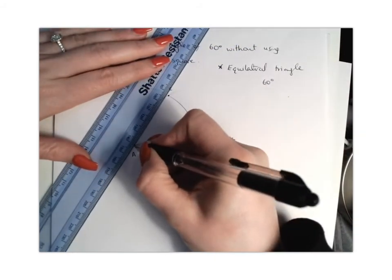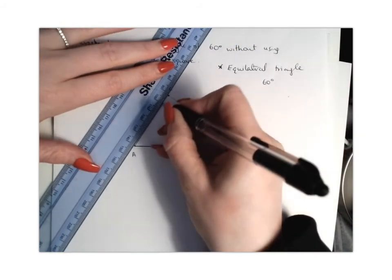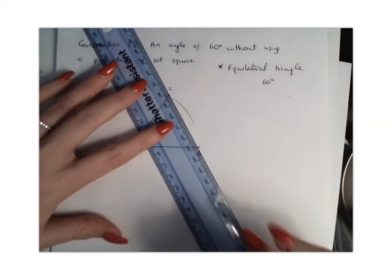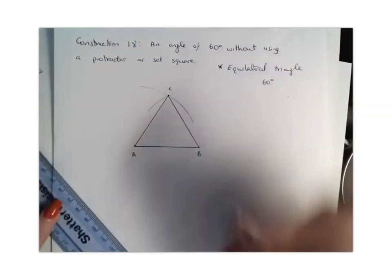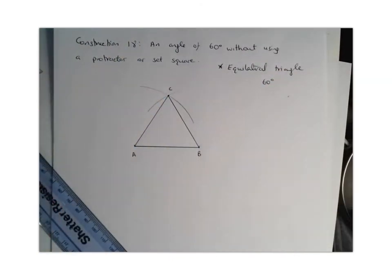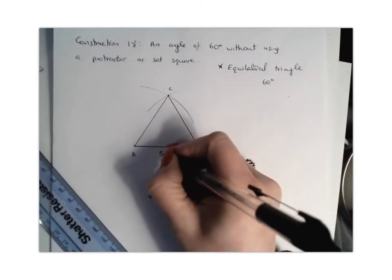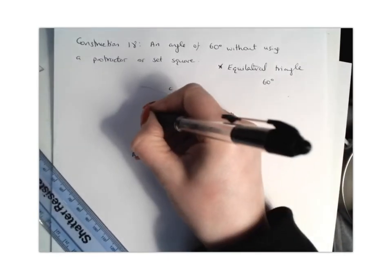Now again I'm doing this in pen because I just want it to be as clear as possible on the video but you should do all of this in pencil and do make sure that you keep all your construction lines as well. So I've just drawn myself an equilateral triangle which has lengths of 5 centimetres.